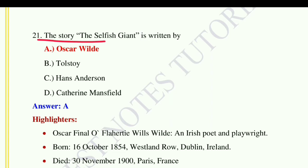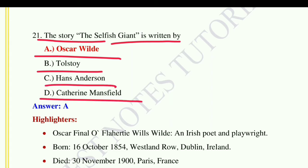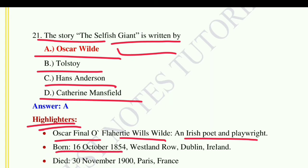Question number twenty-one: 'The Selfish Giant' is written by — option A: Oscar Wilde, option B: Tolstoy, option C: Hans Andersen, option D: Katherine Mansfield. The correct answer is option A, Oscar Wilde. Oscar Fingal O'Flahertie Wills Wilde was an Irish poet and playwright, born on 16th October 1854 at Westland Road, Dublin, Ireland, and died on 30th November 1900 in Paris, France.